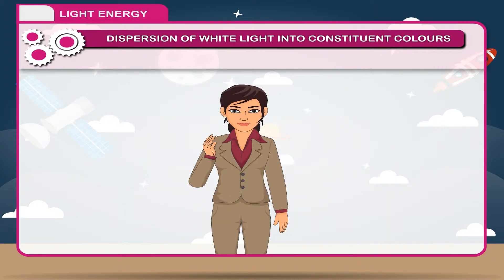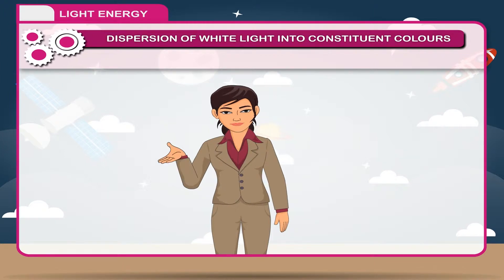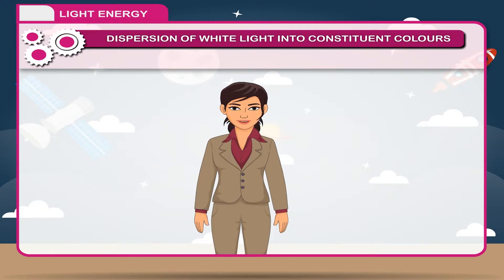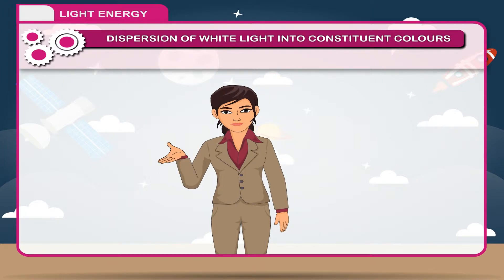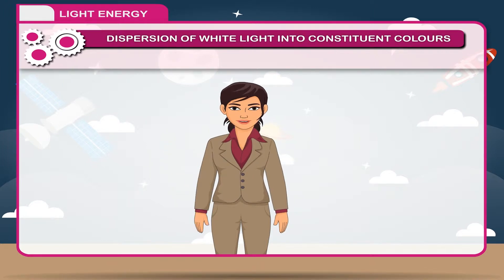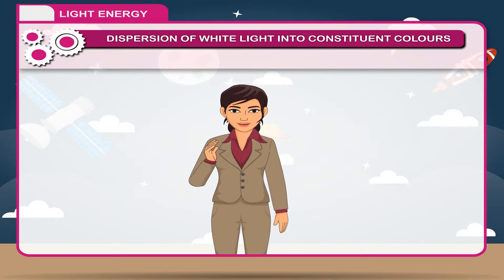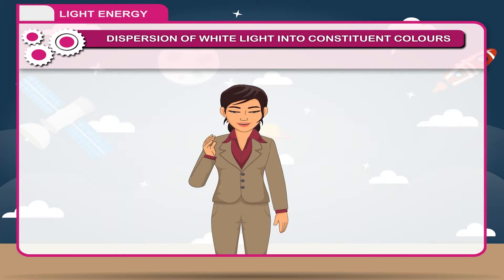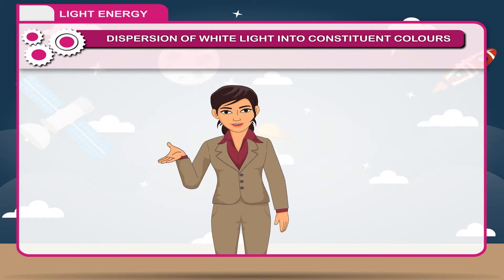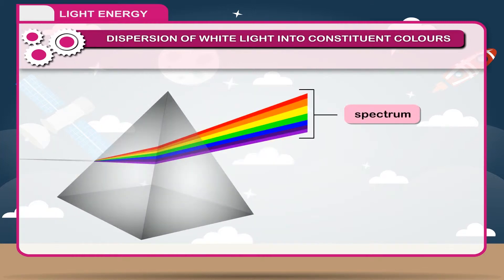This happens because each colour undergoes refraction in different ways. The speed of light in a medium is different for different colours. Thus, the refractive index of the medium is different for different colours. Due to this, each colour deviates differently. The group of colours is called spectrum.